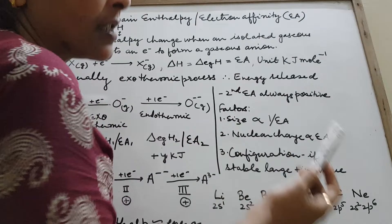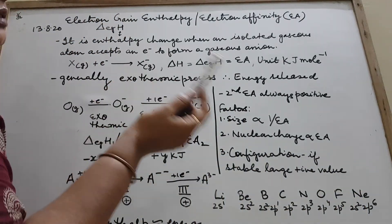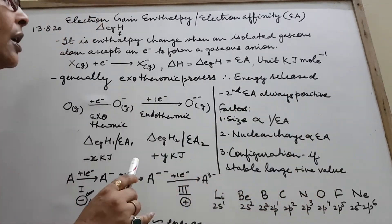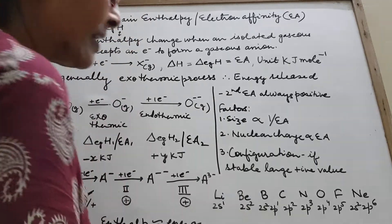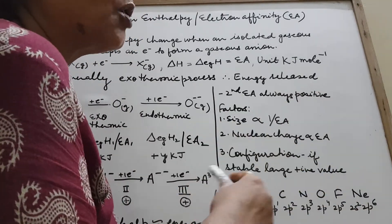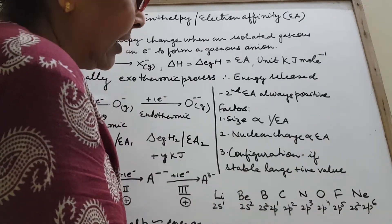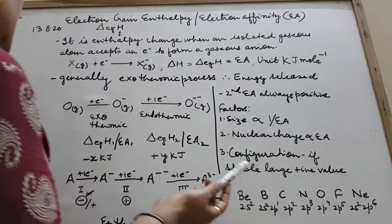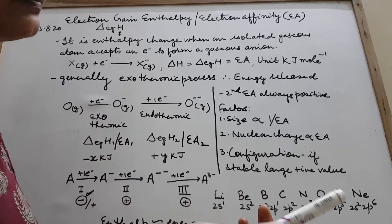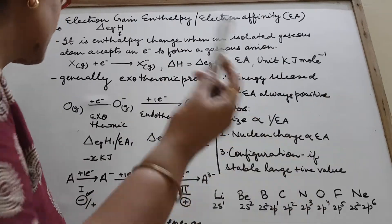Children, you have actually been taught this in class 10 also. Generally, it is an exothermic process — energy is released in about 95% of cases. That's why in class 10, the definition was: it is the amount of energy released. That was in general. But not always — in some cases energy may be required as well.